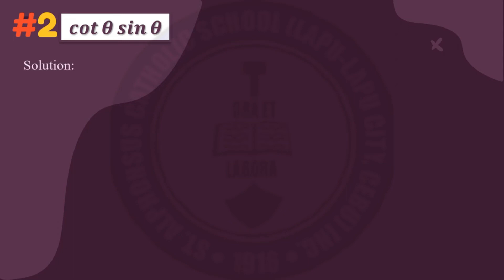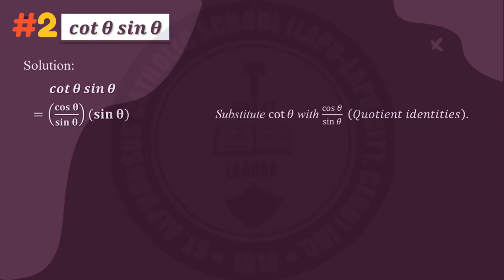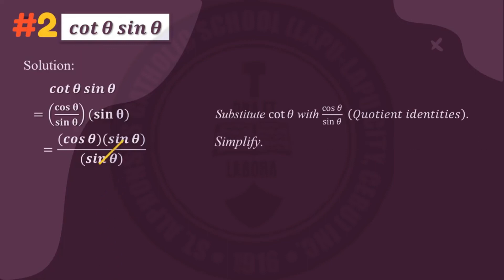Number two: cotangent theta times sine theta. For our solution, we substitute cotangent theta with cosine theta over sine theta, using one of the quotient identities. We then multiply cosine theta over sine theta with sine theta. The result is cosine theta times sine theta all over sine theta. We cancel out sine theta, so cotangent theta times sine theta is equal to cosine theta.